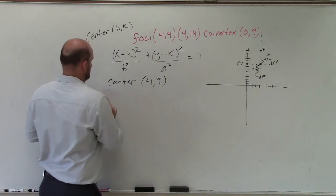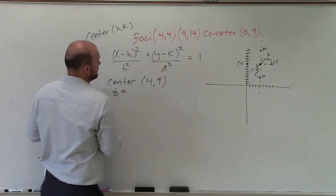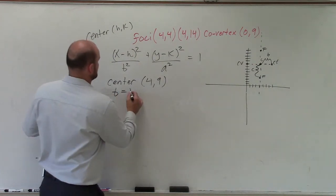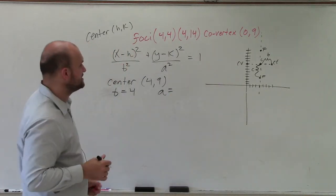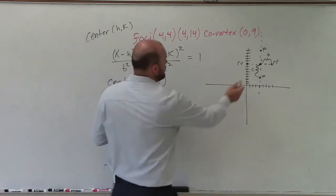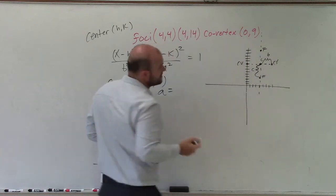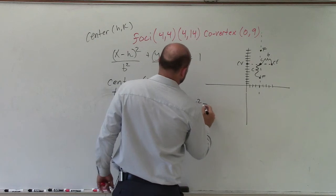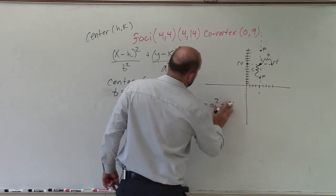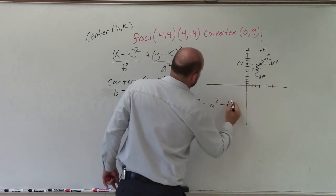So I'm sorry, let's write out our values. So I can say b is equal to 4, and a is going to be equal to the distance from my center to my vertices, which I don't have. However, there is a relationship of a, b, and c. So we have c squared is equal to a squared, I'm sorry, a squared minus b squared.